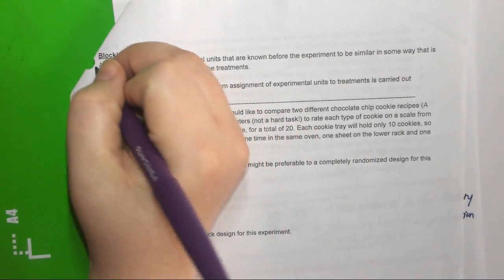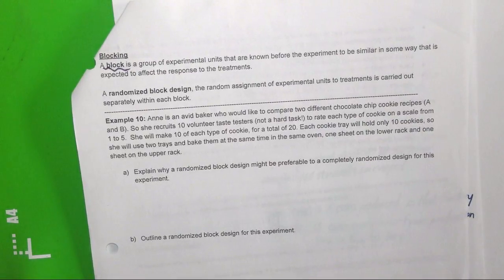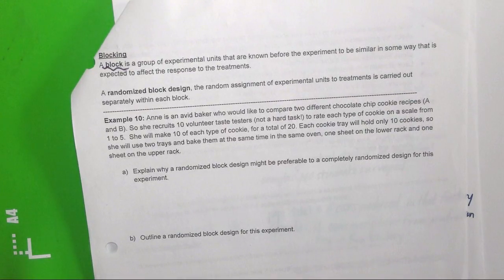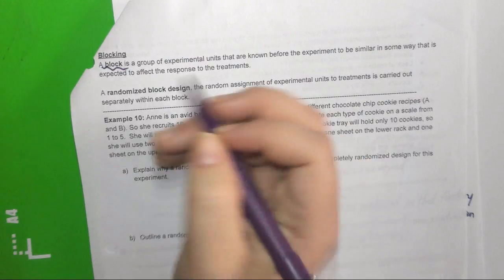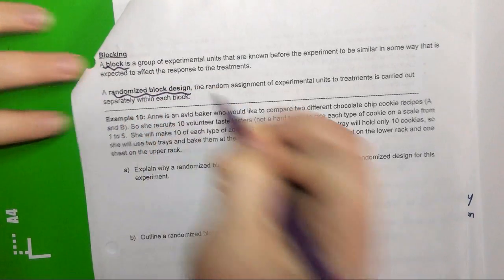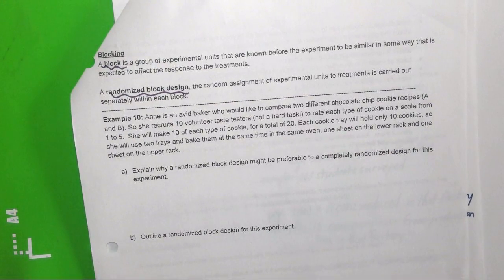And then here's the other thing you were mad at the other day. So finally you're going to be unmad. Blocking. Blocking is a group of experimental units that are known before the experiment to be similar in some way that is expected to affect the response to the treatments. A randomized block design is the random assignment of experimental units to treatments is carried out separately within each block. When you read that, you're like I don't know what that means. But I swear, after we work through the next example, it'll be okay.